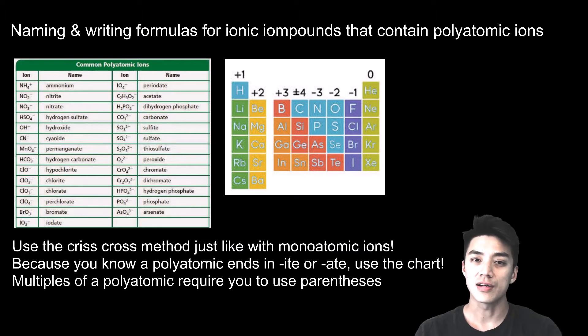So we're finally here - you're going to learn how to name and write formulas for ionic compounds that contain polyatomic ions. Just like how we did in my part 1 video for monatomic ions, we're going to use a crisscross method. You can use a chart to look for their formula and charge, crisscross them, and if you ever have multiples of a polyatomic, just make sure you use parentheses.